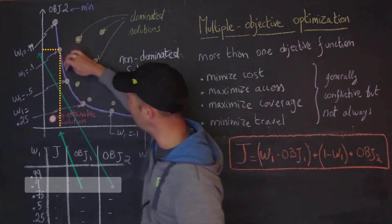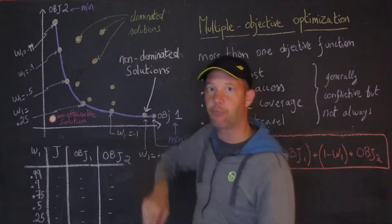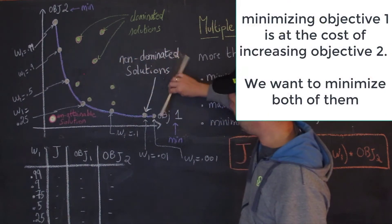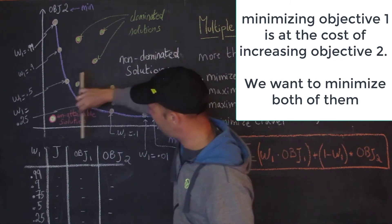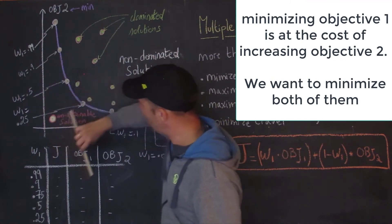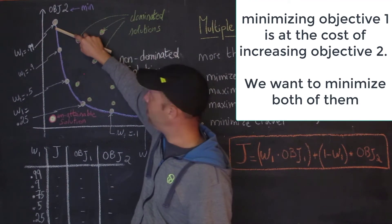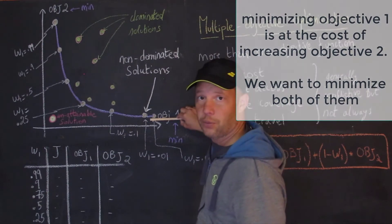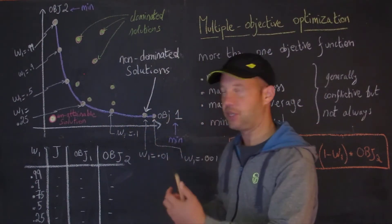Then you end up with this sort of trade-off curve. What does that mean in practice? If I'm trying to minimize objective one as little as I can, then it's going to be to the detriment of objective two. If I'm trying to minimize objective two as much as I can, that's going to be at the detriment of objective one. So that's where you have these conflicting objectives.